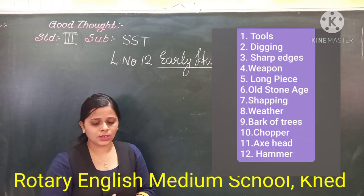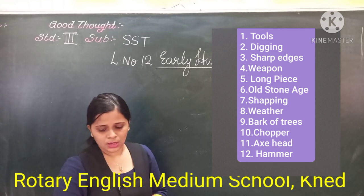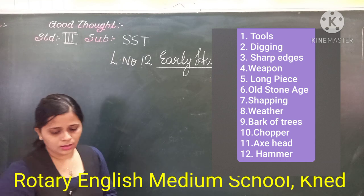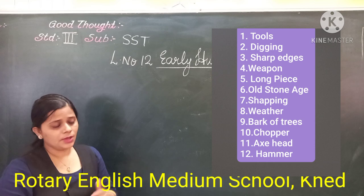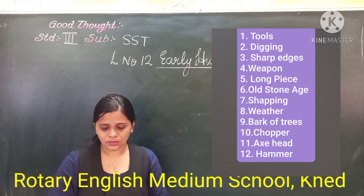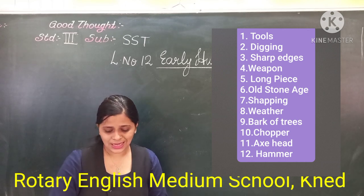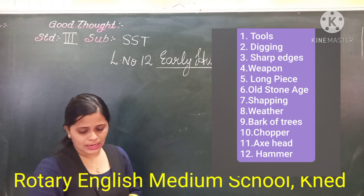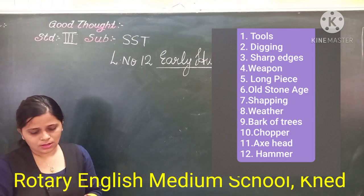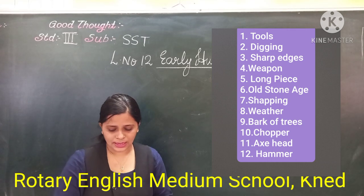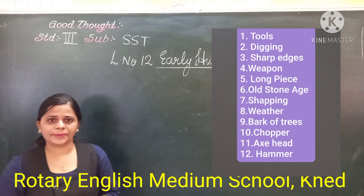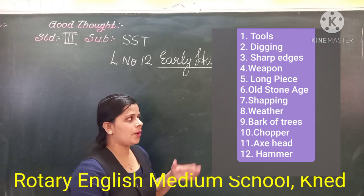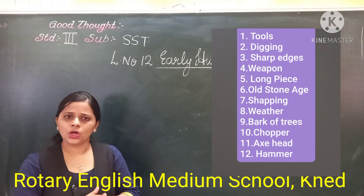Now take down the new words. First: tools. Second: digging. Third: sharp edges. Fourth: weapon. Fifth: long piece. Sixth: old stone age. Seventh: sharpening. Eighth: weather. Ninth: bark of trees. Tenth: chopper. Eleventh: axe. Twelfth: hammers. Students, these are all new words — copy them down in your notebook.